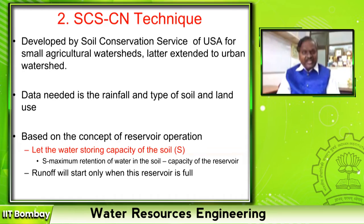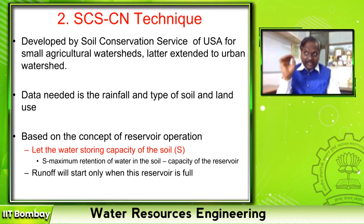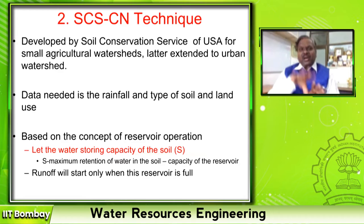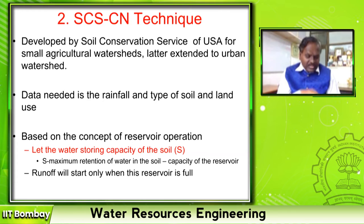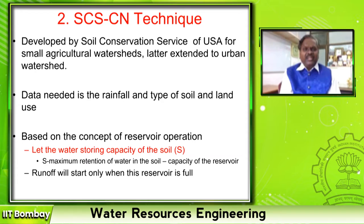This method was mainly developed for small agricultural watersheds — all experimental agricultural watersheds. It was then extended to urban catchments, and now we use it for large catchments by treating them as combinations of small agricultural watersheds. A large basin is nothing but a combination of small, homogeneous agricultural watersheds. Once we divide the large area into smaller homogeneous regions, we can still apply the SCS curve number technique.